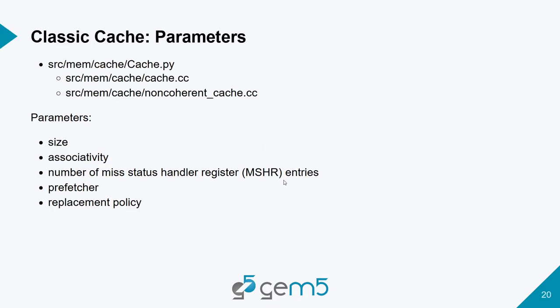There's also a non-coherent cache in gem5's classic caches. You might think you could use the standard cache as a memory-side cache behind the point of coherency, but it won't work because the cache assumes it's part of a coherent hierarchy with a point of coherency behind it. The non-coherent cache is what you'd use if you need a cache that's not part of the coherent hierarchy.